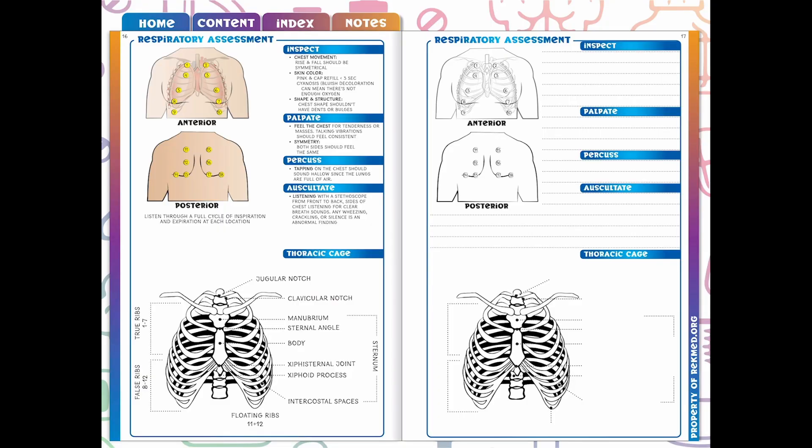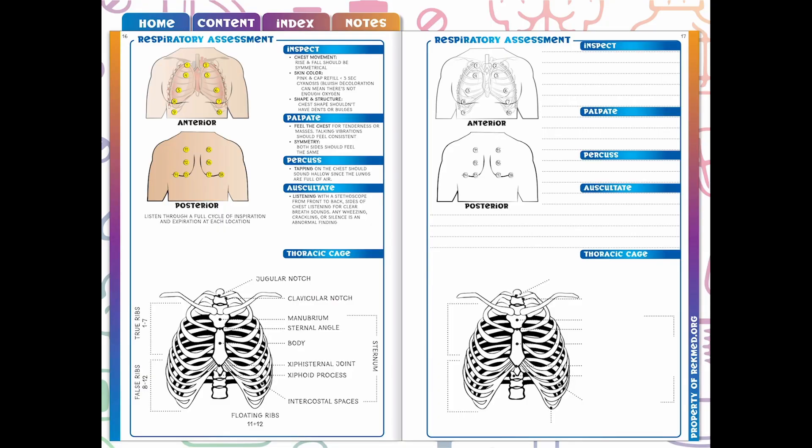We want to get them out of whatever they're wearing because we're going to do our first step — inspection — and we want to look at the chest and thoracic area. So let's get into this inspection.